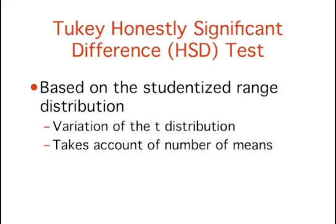The inflated type 1 error rate can be controlled using the Tukey Honestly Significant Difference Test, or Tukey HSD for short. The Tukey HSD is based on the studentized range distribution, which is a variation of the t-distribution. We use the studentized range distribution because it takes into account the number of means being compared.